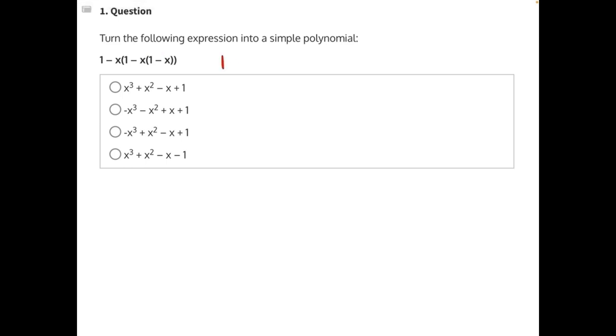So let's rewrite our expression until we get to that negative x and then distribute. Negative x times 1 would be negative x. Negative x times negative x would be positive x squared.